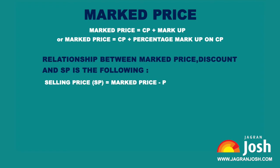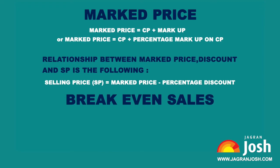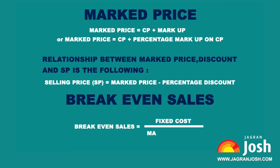The relationship between marked price, discount, and SP is: SP = Marked Price − Percentage Discount. Break-even sales: profit and loss can be calculated in terms of break-even sales. Break-even sales is the point at which one incurs neither profit nor loss in selling a number of units.